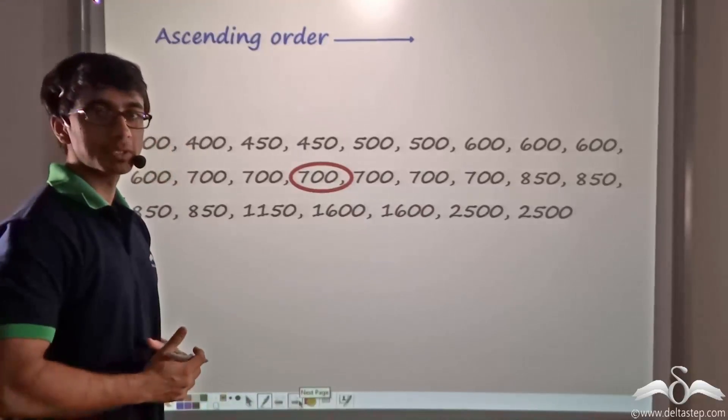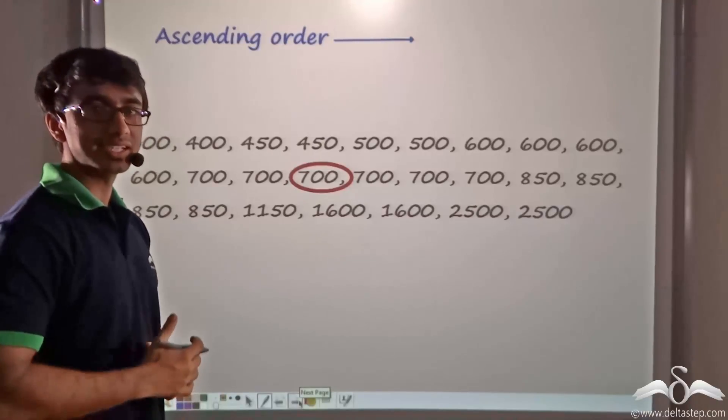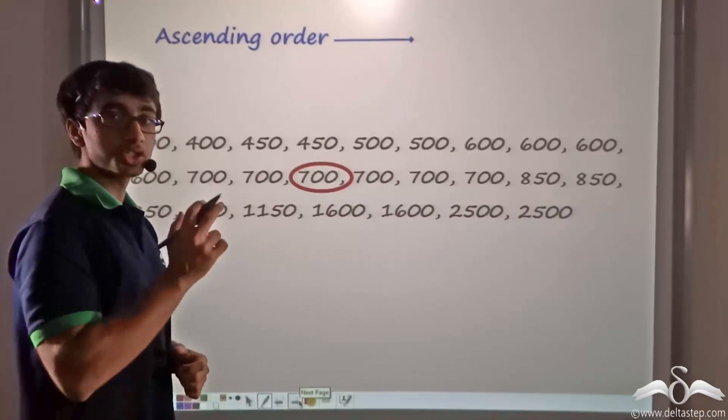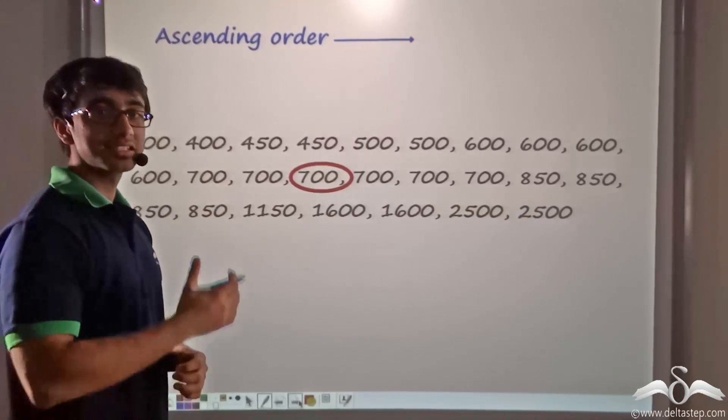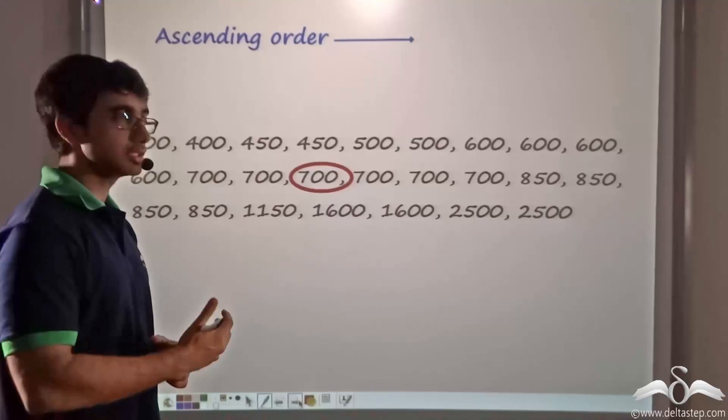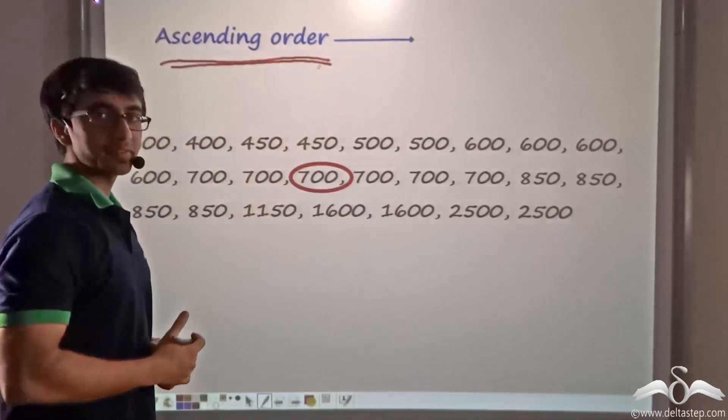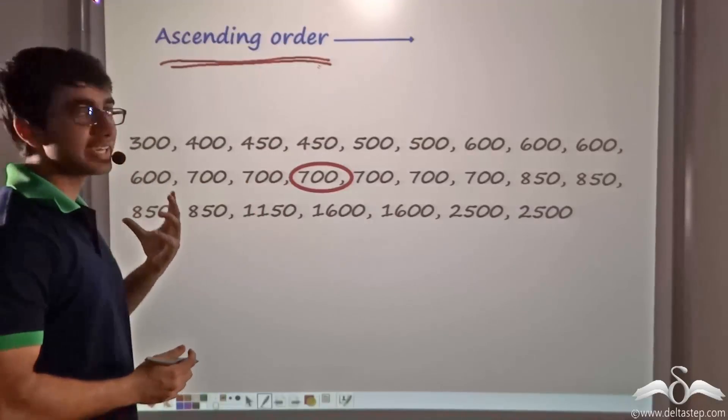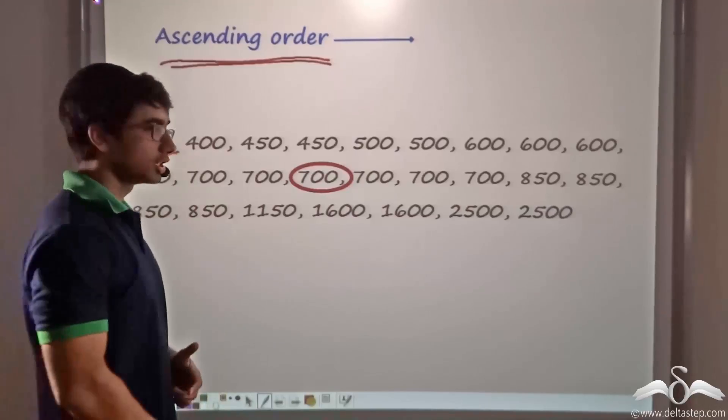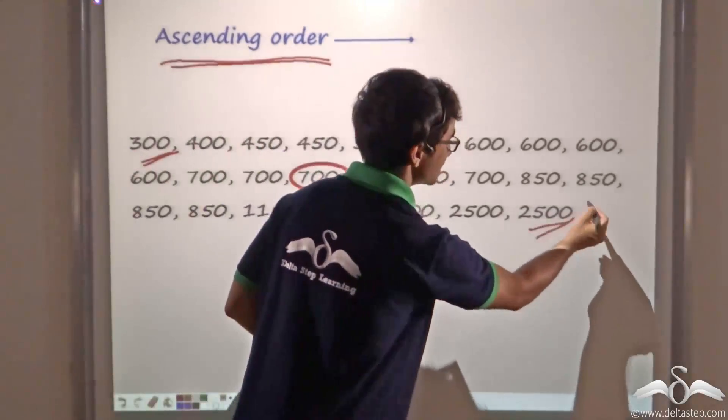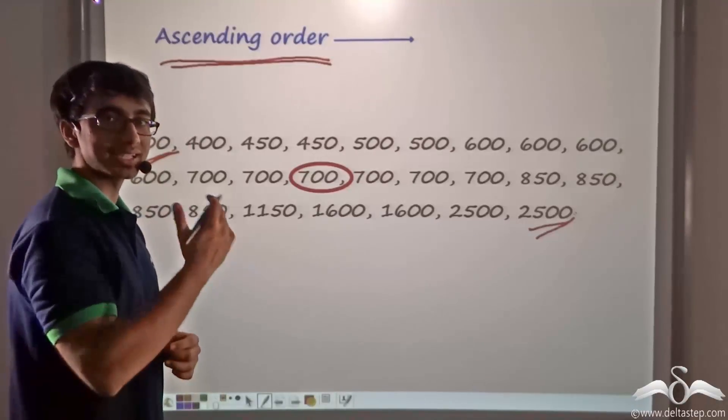So now the shopkeeper proceeds to find out another value which is pertinent to the given set of data. Now in order to do this, firstly, he arranges the data that is the money collected from each customer in ascending order. So over here we find that the numbers have been arranged in ascending order. That is from the lowest price dress to the highest priced dress. So over here 25 observations have been arranged in ascending order.